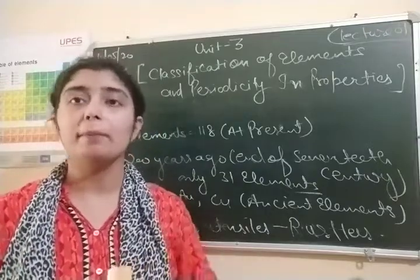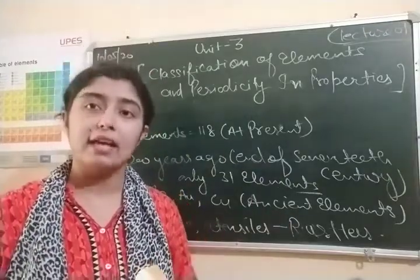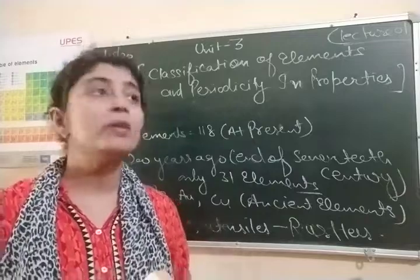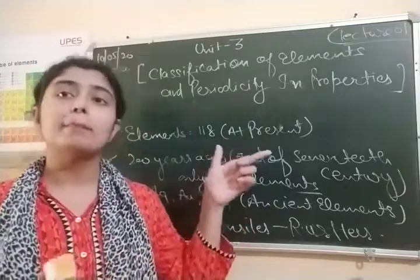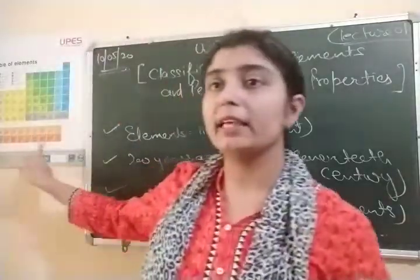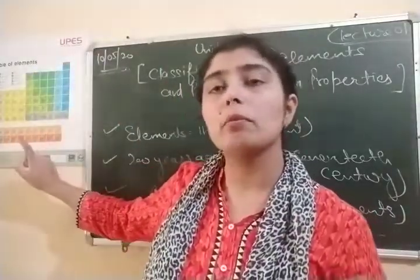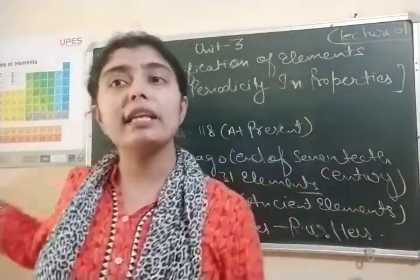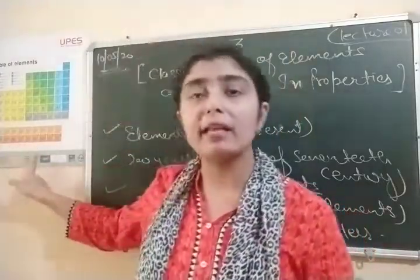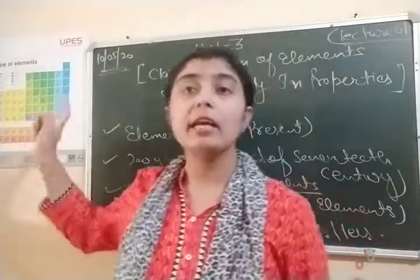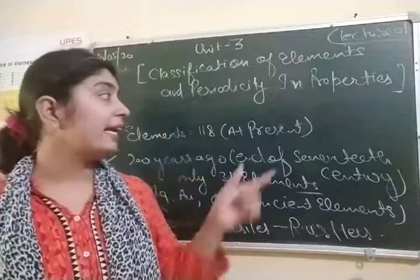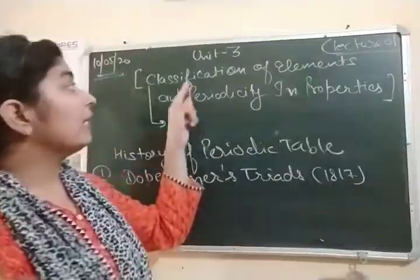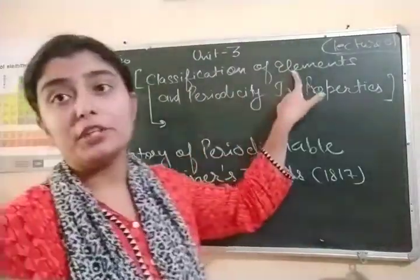So, all these elements that you see are arranged in a periodic table, called the modern periodic table. You have been reading about this from previous classes, from 10th standard also. The modern periodic table was given by Henry Moseley, and it contains 118 elements.